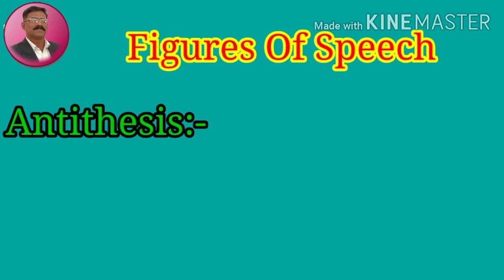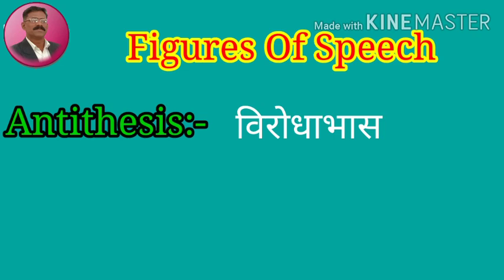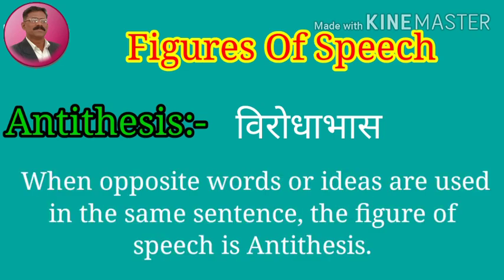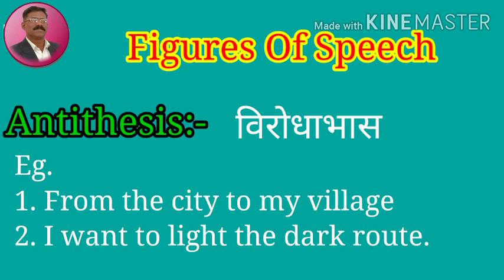Next one is antithesis. When opposite words or ideas are used in the same sentence, the figure of speech is antithesis. For example, 'from the city to my village' — here the opposite words city and village are used. Second sentence: 'I want to light the dark root' — in a single line, opposite words or ideas are used side by side.